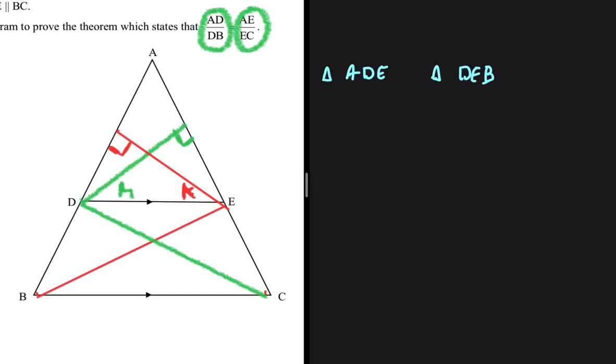What do I mean by that? We can say that the area of triangle ADE divided by the area of triangle DEB is half base multiplied by height. Let's pay our attention to ADE first.